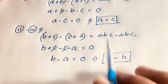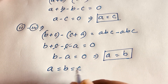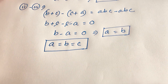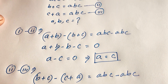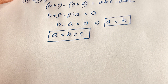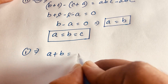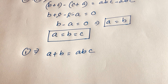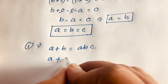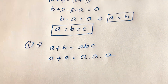From these two results, combining this value and this value, we can say easily that a is equal to b is equal to c — every value is the same. Now taking our first equation, a plus b is equal to abc, and substituting b = a and c = a, we get a plus a is equal to a times a times a.